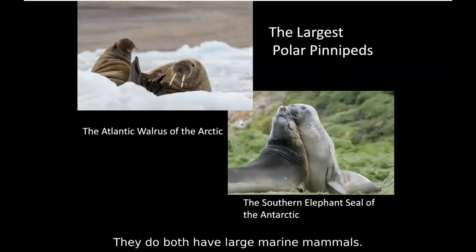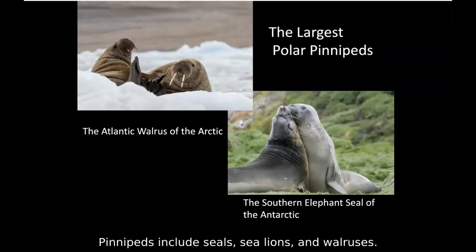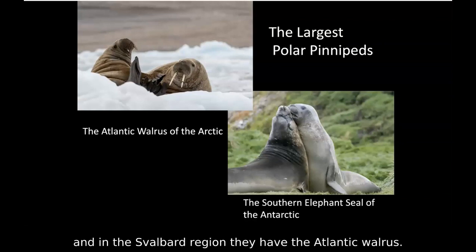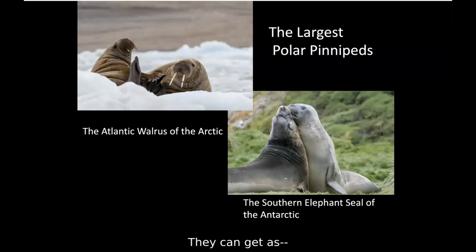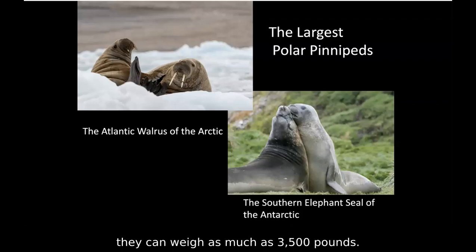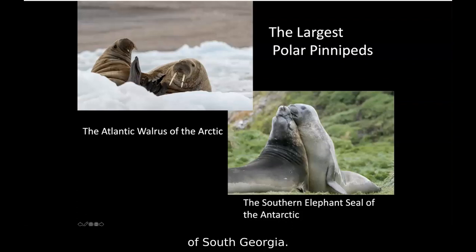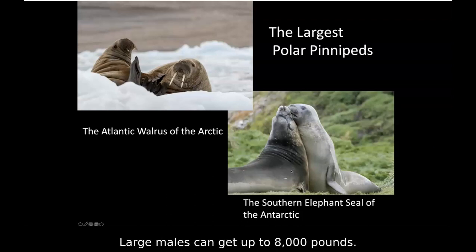Both regions have large marine mammals. Pinnipeds include seals, sea lions, and walruses. Walruses are only found in the Northern Hemisphere — in the Svalbard region they have the Atlantic walrus, a big animal that can weigh as much as 3,500 pounds. These elephant seals were photographed off South Georgia and are absolutely huge — large males can get up to 8,000 pounds.